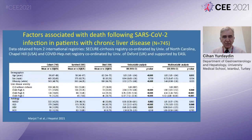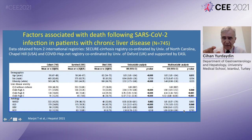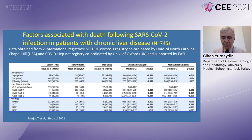Regarding the etiology of chronic liver disease: how important is the etiology of chronic liver disease in SARS-CoV-2 infected patients' outcomes? Non-alcoholic fatty liver disease, hepatitis B, and hepatitis C were not found to affect mortality by multivariate analysis, but alcoholic liver disease was the only independent predictor of mortality as an etiology of chronic liver disease.